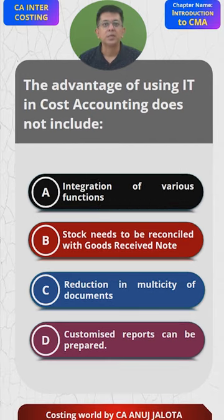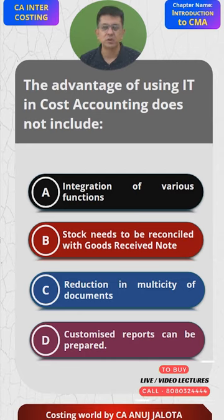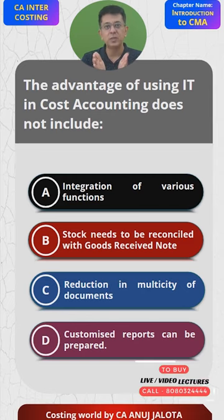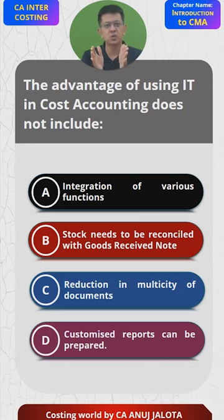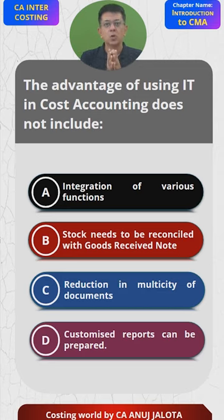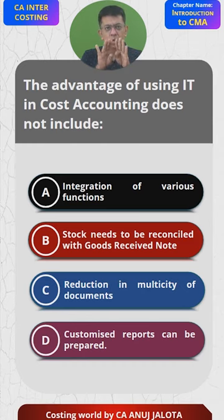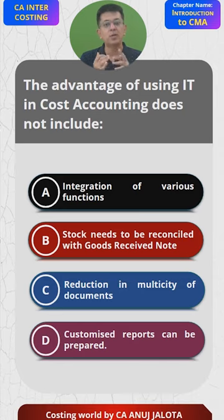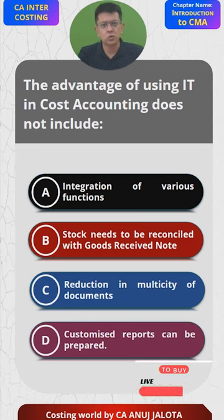Time's over. In this case, integration of various functions - when you have everything computerized, when you have an IT department, it is very easy to synchronize different functions. For example, the factory requires raw material from the stores department. If raw material is less, we need to order from the supplier - through computerized systems it's easy to find the status of orders. So Option A is true - it is an advantage.